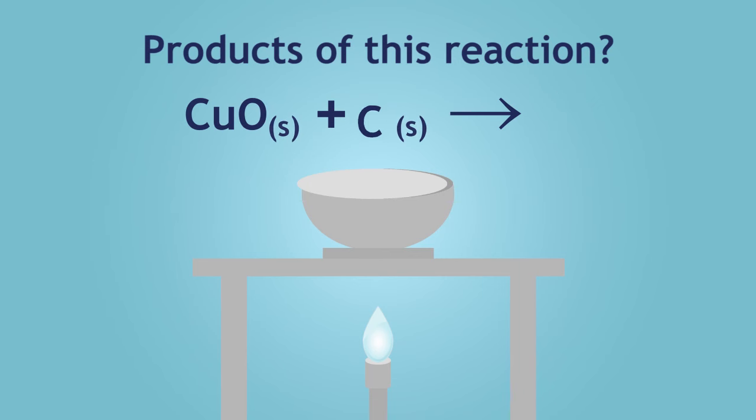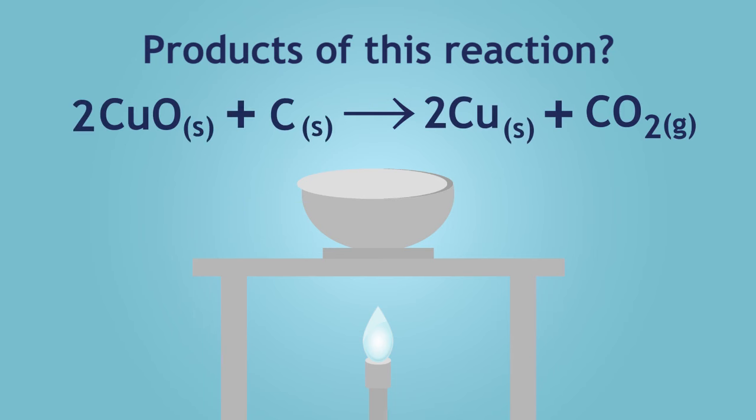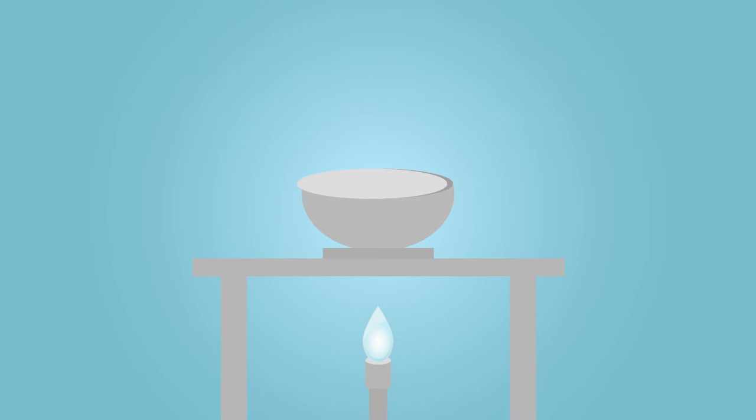The carbon displaces copper in copper 2-oxide to give copper metal and carbon dioxide. Remove the crucible from the Bunsen burner and empty its contents into a beaker of cold water. Pour out the water and charcoal. Rinse with water and repeat.